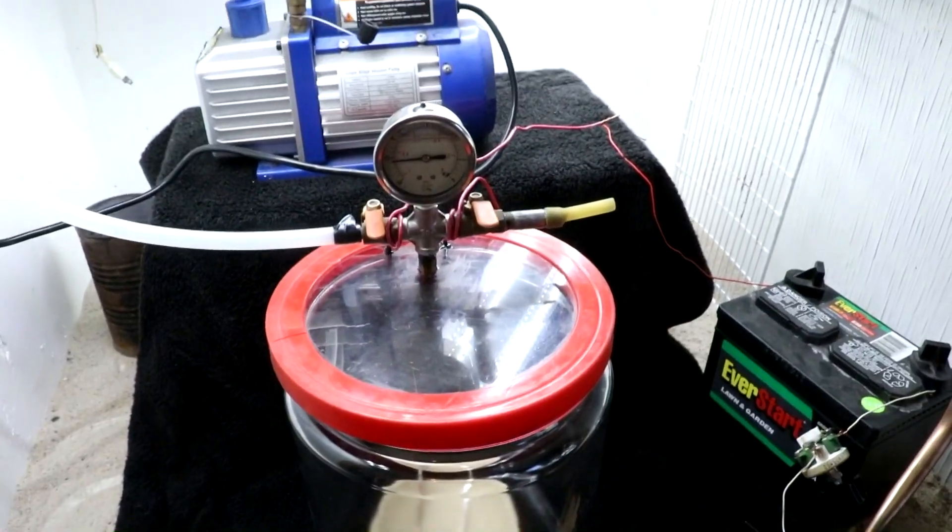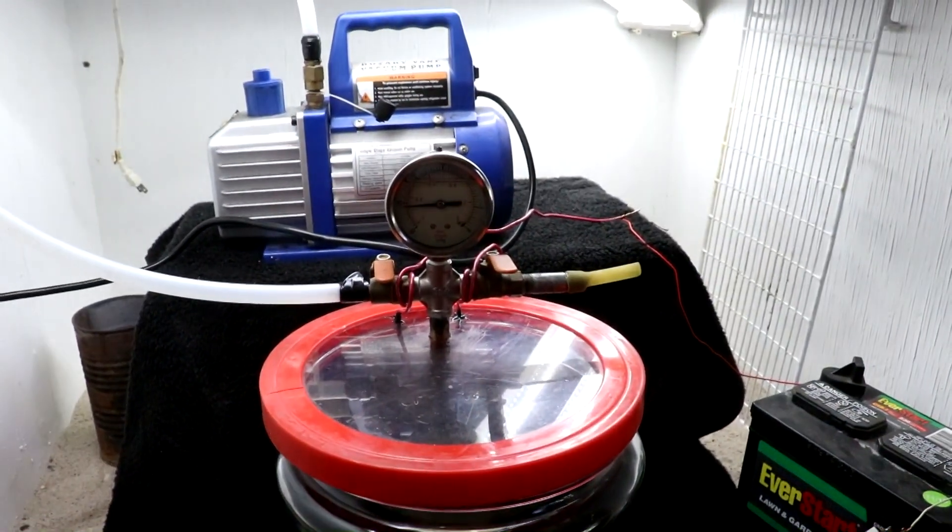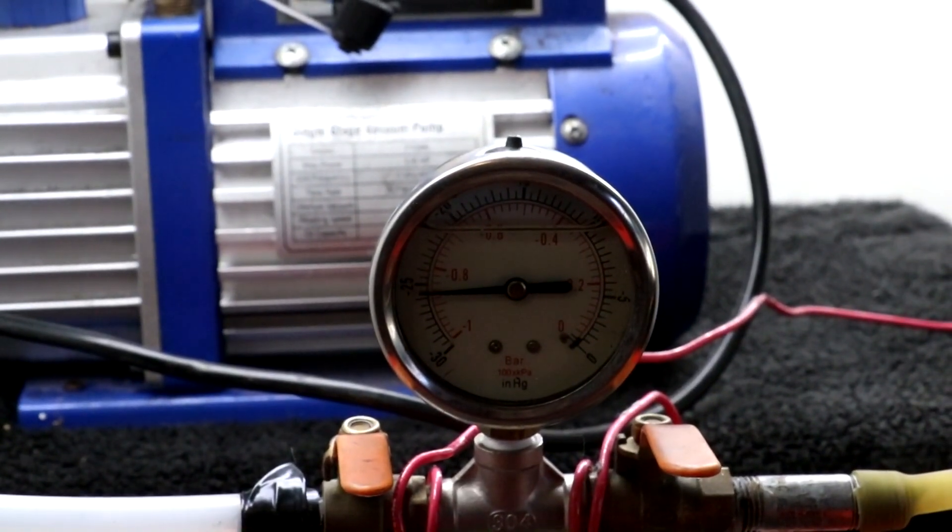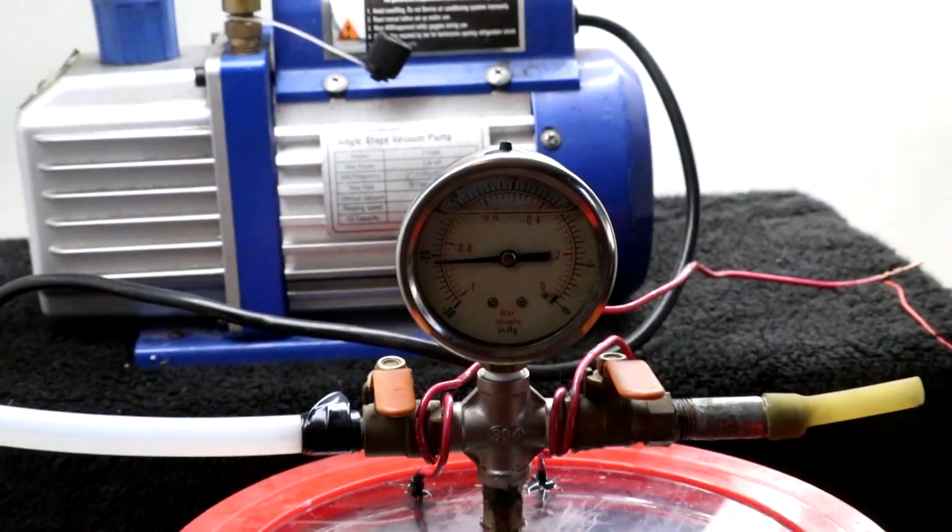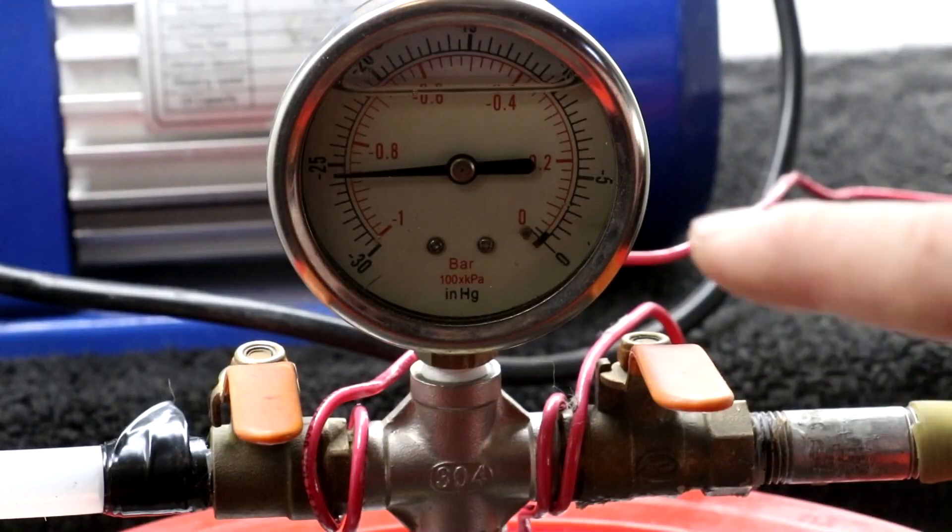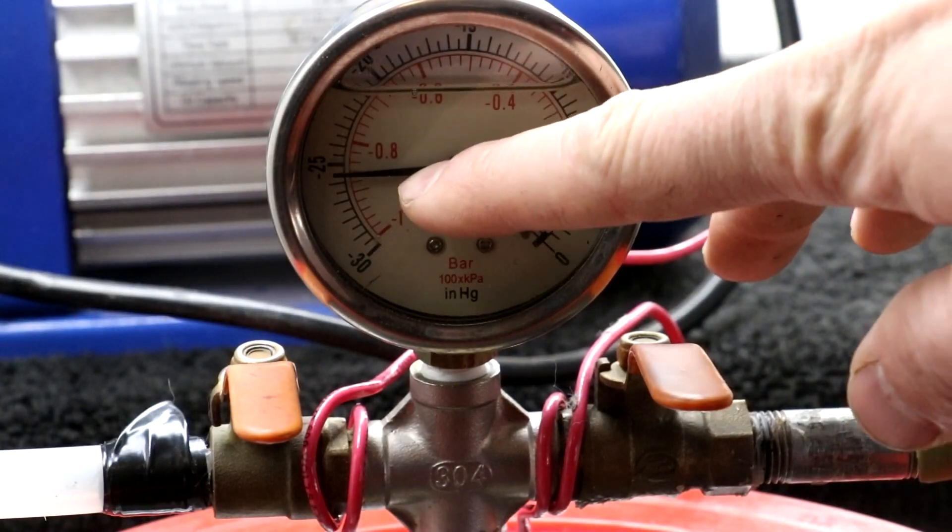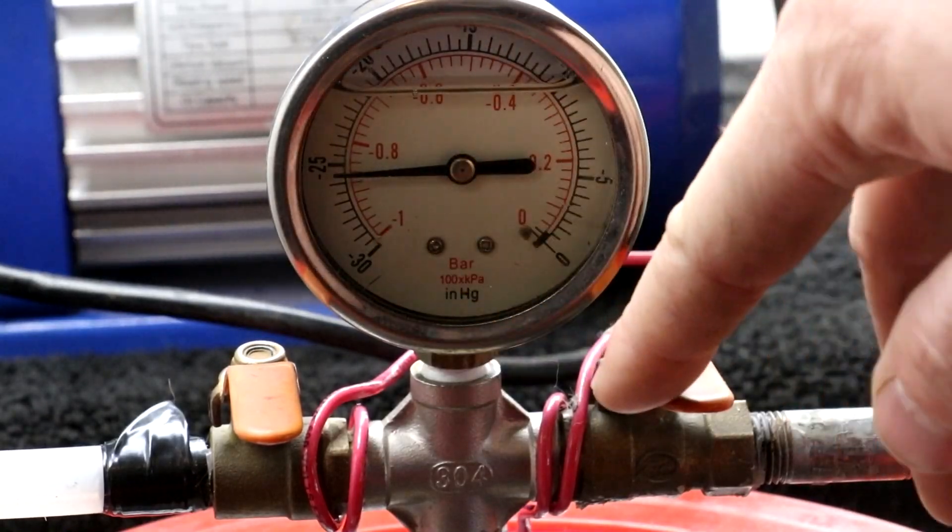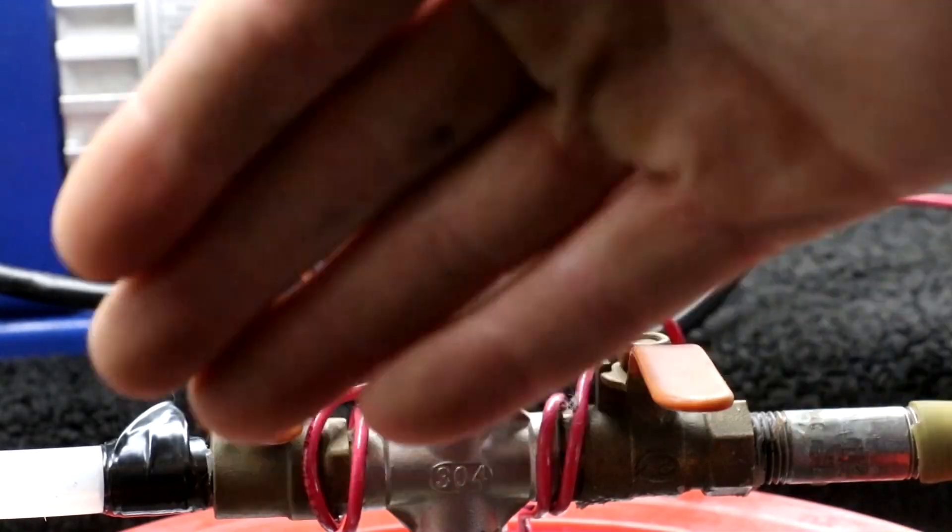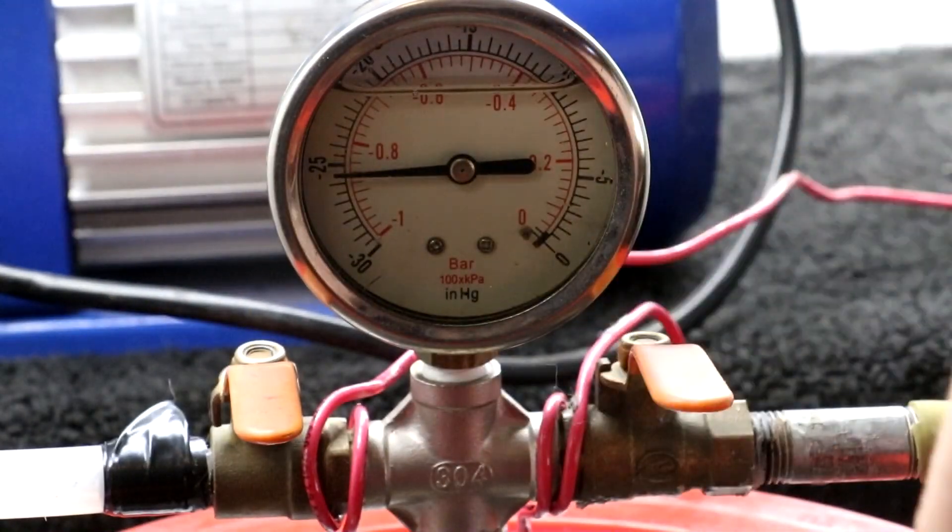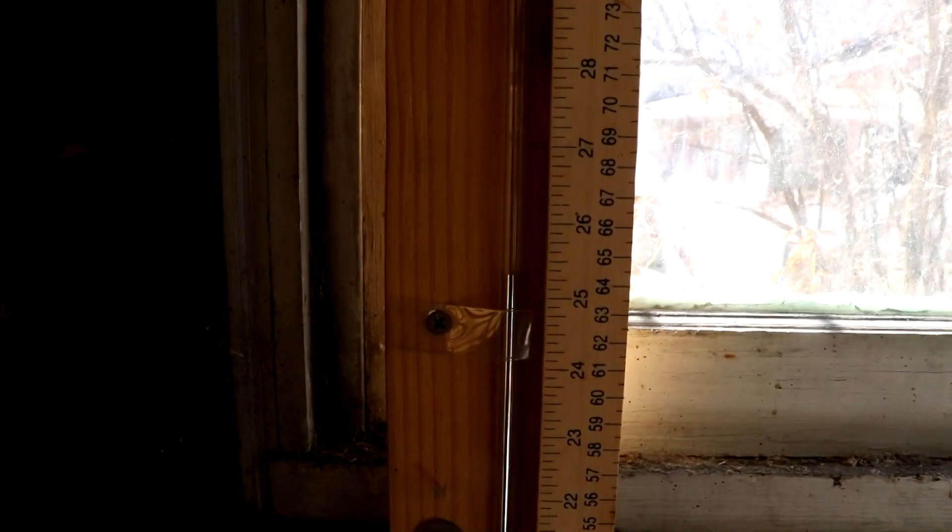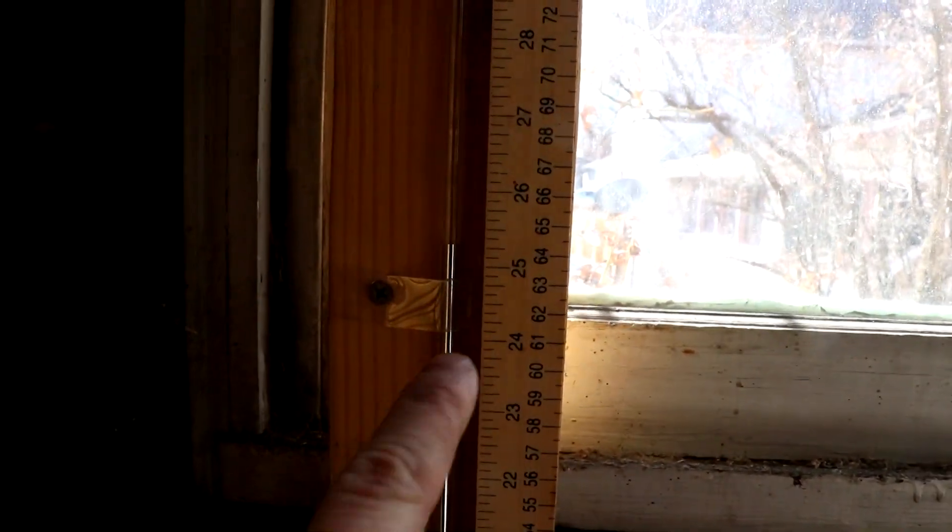First of all, the chamber is currently under vacuum. See, 25 and a half inches of mercury worth of vacuum. If you're asking why this value is not 29 inches, it's because I'm not at sea level. I'm up in the mountains, so the atmospheric pressure out here is lower.